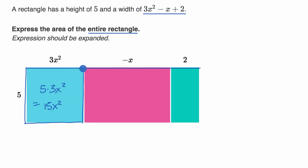Now what about this purple area right over here? Well, it's going to be height times width again. So it'll be 5 times negative x, which is the same thing as negative 5x.